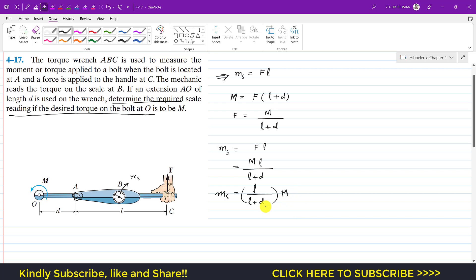Now if we look into this equation, this L divided by L plus D ratio will always be less than 1. So if this is less than 1, then this scale reading will always be less than that capital M.